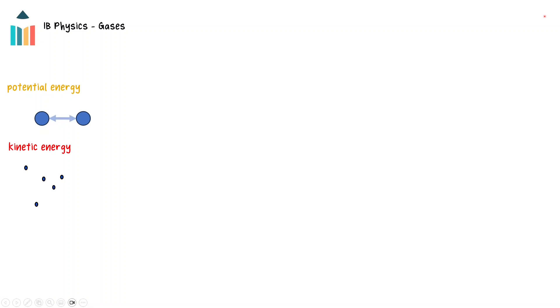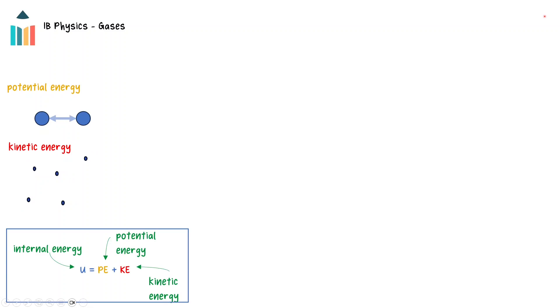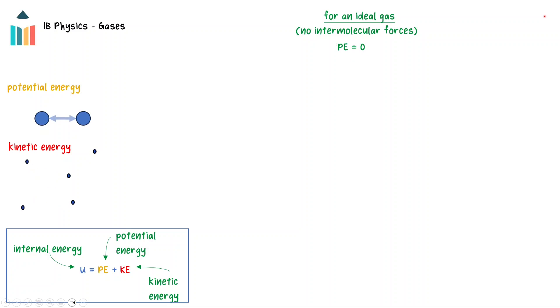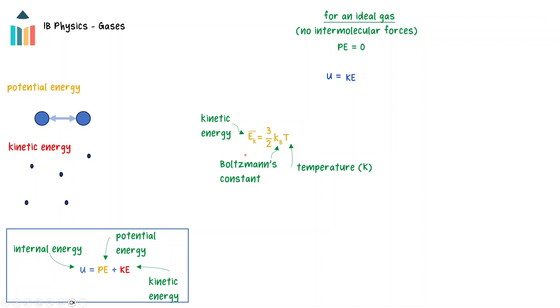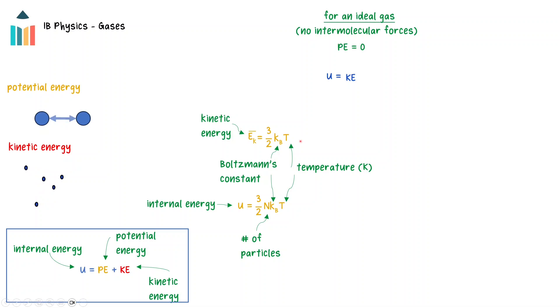Particles of a real gas contain potential energy in the intermolecular bonds and kinetic energy in their movement. The total energy of the particles is called the internal energy and is the sum of the total potential and kinetic energy of the particles. Since one of the assumptions for an ideal gas is that intermolecular forces are negligible, the potential energy of ideal gases is considered to be zero, so the internal energy of an ideal gas is only the average kinetic energy of the particles. The kinetic energy of a particle is given by: kinetic energy equals three-halves times Boltzmann's constant times the temperature in Kelvin. The internal energy of an ideal gas is therefore three-halves times the number of particles, capital N, times Boltzmann's constant times the temperature in Kelvin.